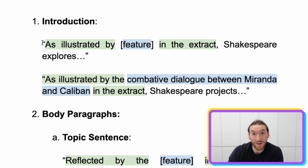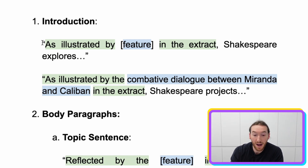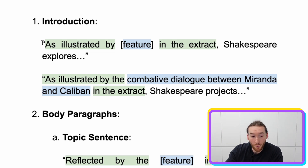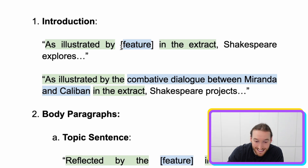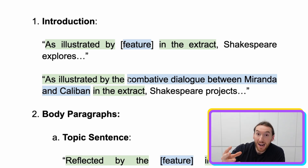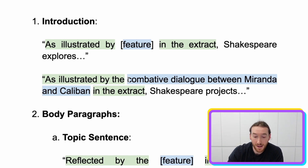You can see an example here: 'As illustrated by the combative dialogue between Miranda and Caliban in the extract.' Notice it follows this pattern exactly — it fills in the 'feature' part with what was going on: the fact that there was a dialogue that was combative, that was hostile between two characters.